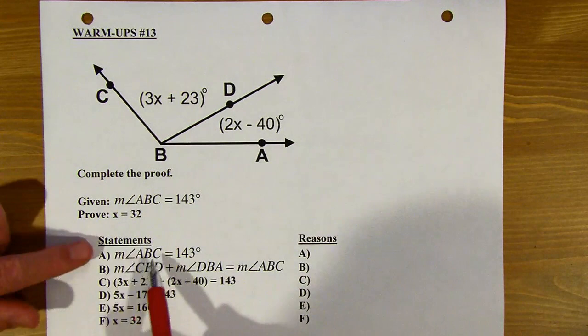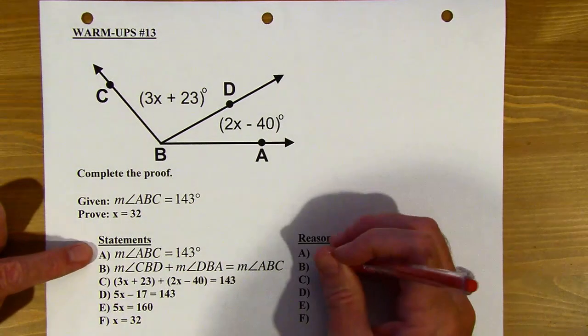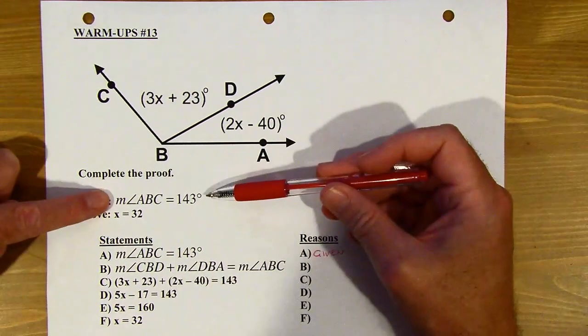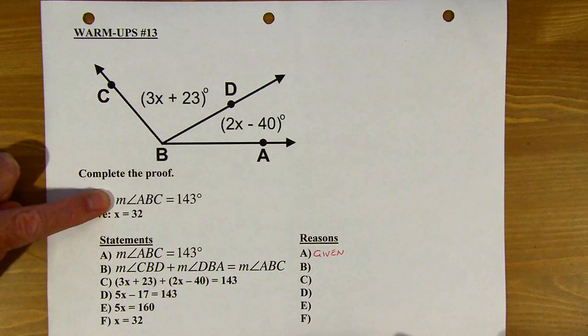Okay, so we're always going to start with the given info, like I was just saying. So the first reason is just given, because the reason that this angle is 143 degrees is just because we're told that it is, right? That's what the problem says.